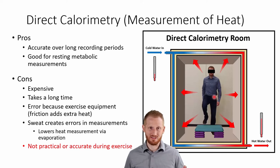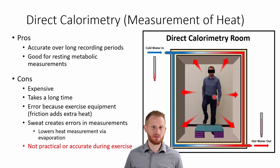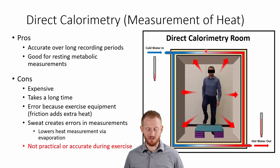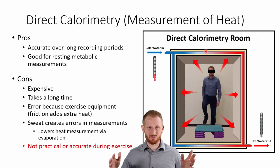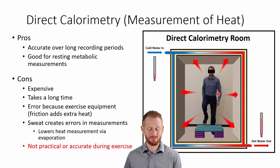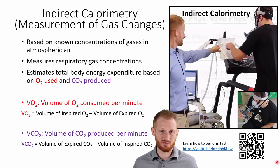If somebody wants to measure free-living energy expenditure, they'll probably use a technique called doubly labeled water, which is more complicated — we won't go into it here. It's typically used over longer periods like days or weeks, unlike a direct calorimetry room which works better over hours.